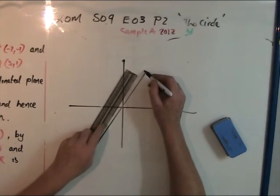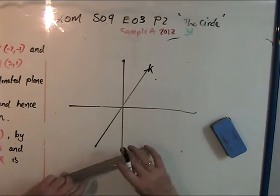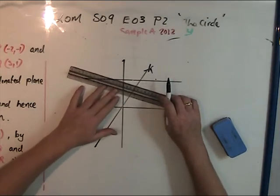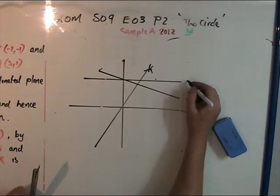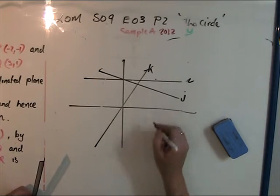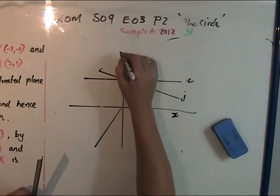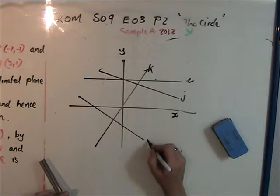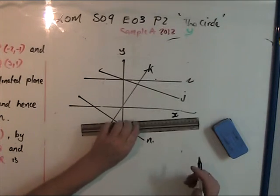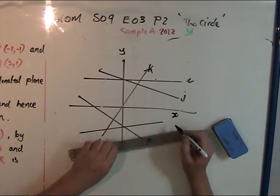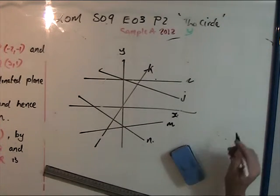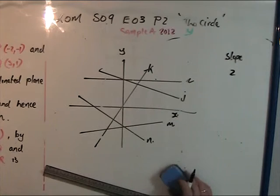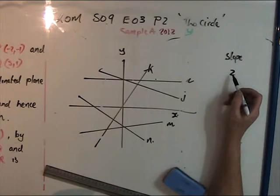The first part of this question had a few lines with different slopes. I'll make sure you know what slopes are about. Here's line K, line L, line J, with the x-axis and y-axis shown. We have lines M and N as well.